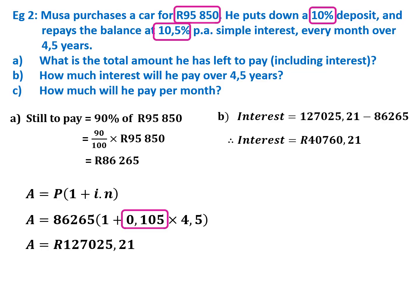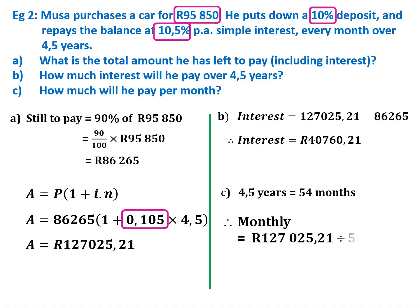It's almost half the price of the car, so be careful when buying something on a loan — it might be cheaper to pay cash, as you end up paying an extra 40,000 rand. Question C: how much will he pay each month? Four and a half years equals 54 months (4.5 times 12). Divide the total of 127,025 rand and 21 cents by 54, giving a monthly payment of 2,352 rand and 32 cents.